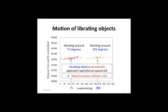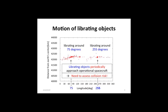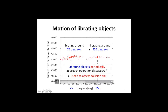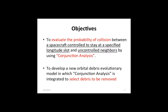So vibrating objects periodically approach operational spacecraft. If accidental collisions take place in the geostationary region, space communities would suffer great inconvenience. Therefore, it is necessary to assess collision risk in the geostationary region. My research has two objectives: one is to evaluate the probability of collision between a spacecraft controlled to stay at a specified longitude slot and uncontrolled neighbors using conjunction analysis; the other is to develop a new orbital debris evolutionary model in which conjunction analysis is integrated to select debris to be removed.